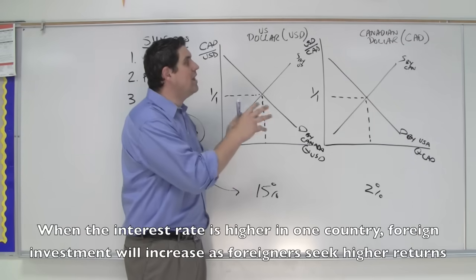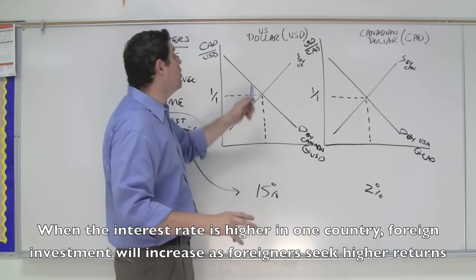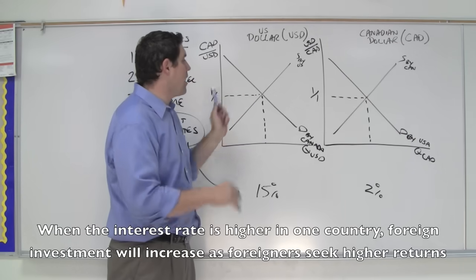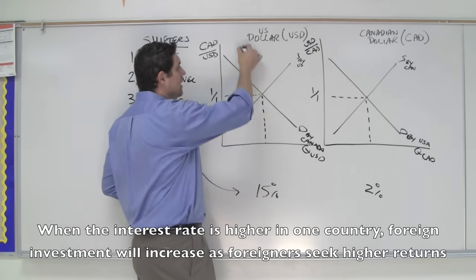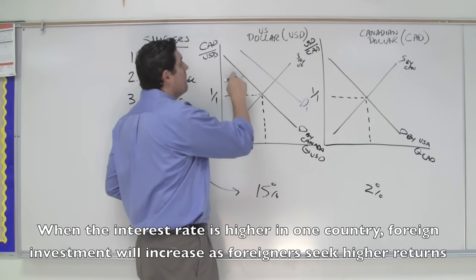The Canadians are going to take their dollars, convert them into American dollars, and then turn around and buy American bonds and get that 15% return.